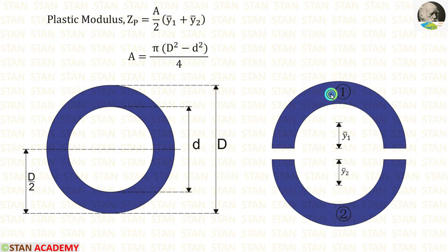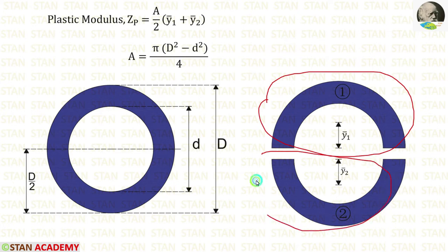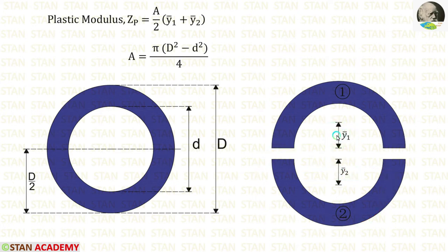Let us keep the part above the equal area axis as part 1 and below the axis as part 2. You can see that both of these shapes are the same, so y1 bar will be equal to y2 bar. So there is no need to calculate both of them; we can calculate any one of them.